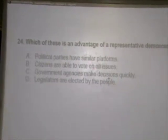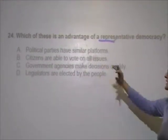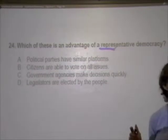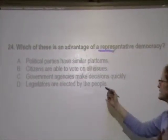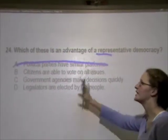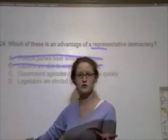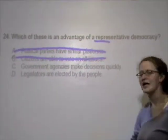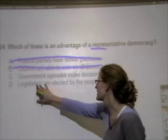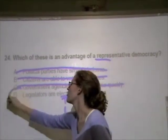Which of these is an advantage of a representative democracy? Political parties have similar platforms — that's just not true; remember Democrats and Republicans have very different platforms. Citizens are able to vote on all issues — no, that's direct democracy. Government agencies make decisions quickly — yeah, quicker than having everyone vote on everything, but the best answer is: legislators are elected by the people. You're electing someone to represent you — and that's why it's a representative democracy.